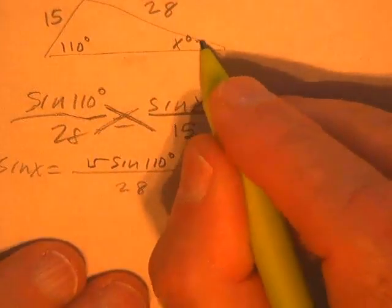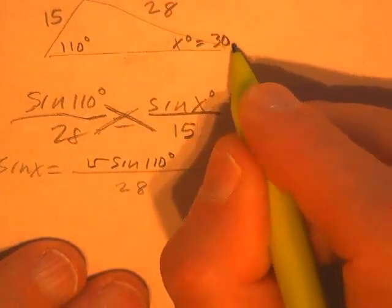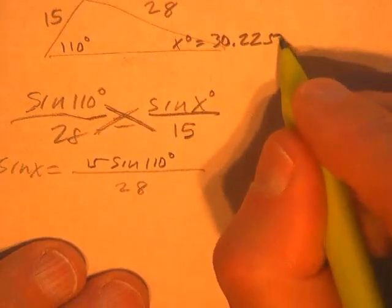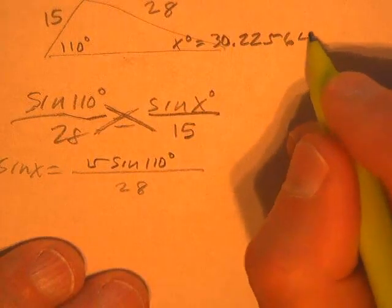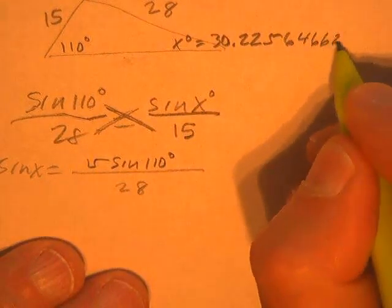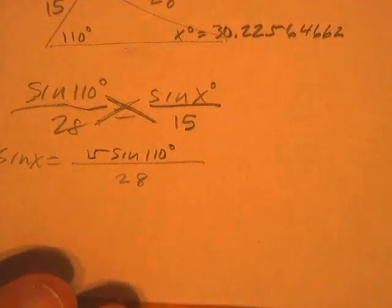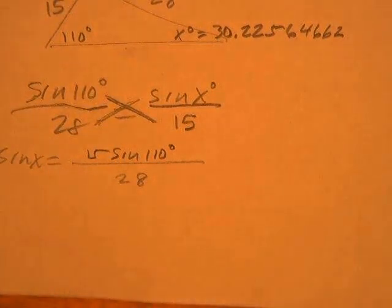All you've got to do is second sine inverse, and you'll be good. There's the angle. Okay, so this angle is 30.22, 56, 4, 6, 6, 2.